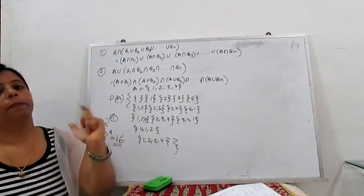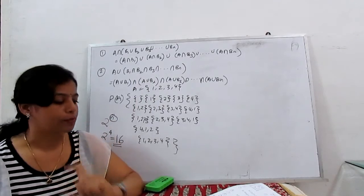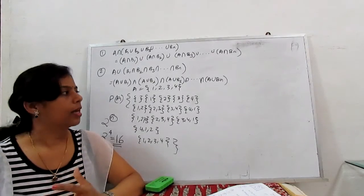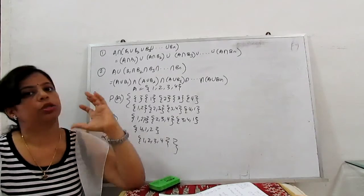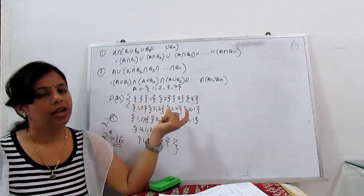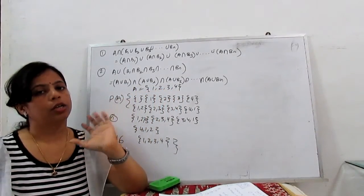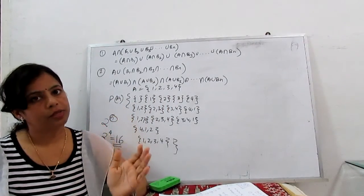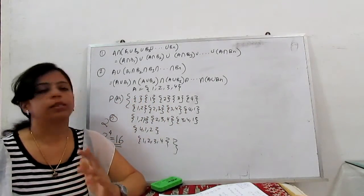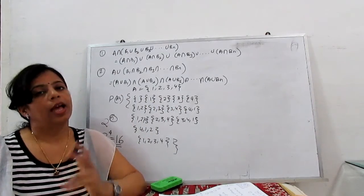There are 16 elements in the power set — you can find all elements for a power set as the collection of all subsets. A class of sets is basically a power set — the collection of all subsets (members) of a given set. A family of sets means a collection of many classes of sets. In further videos, we will solve more examples on this algebra of sets.